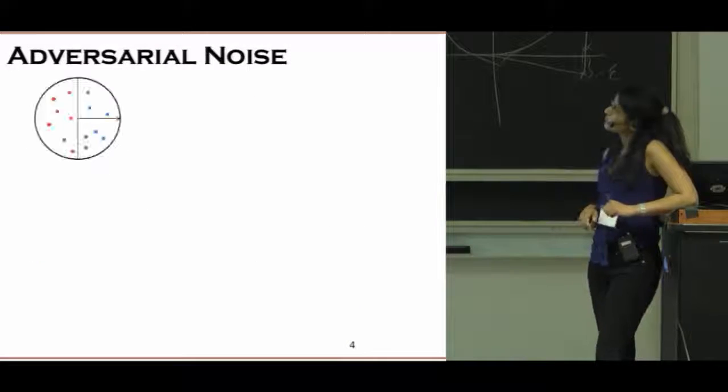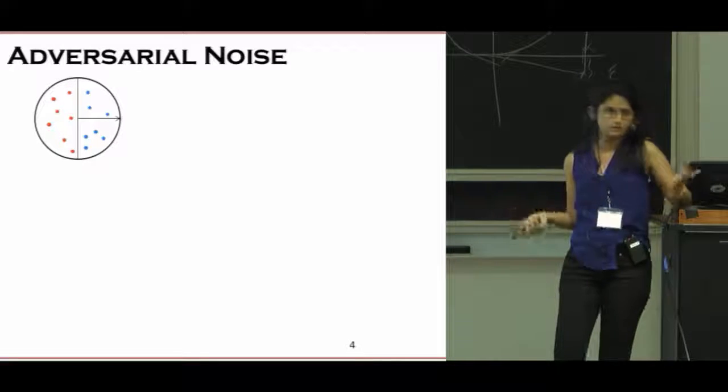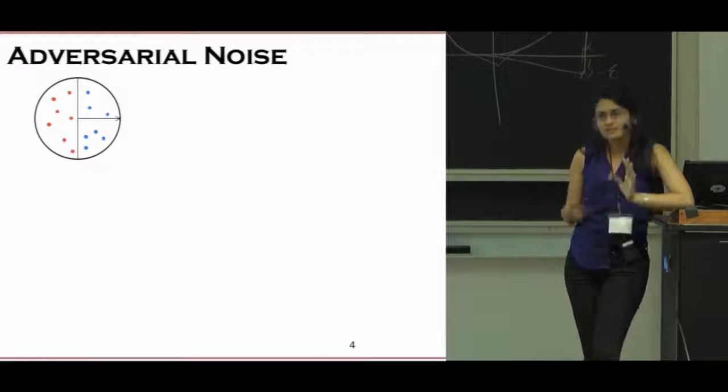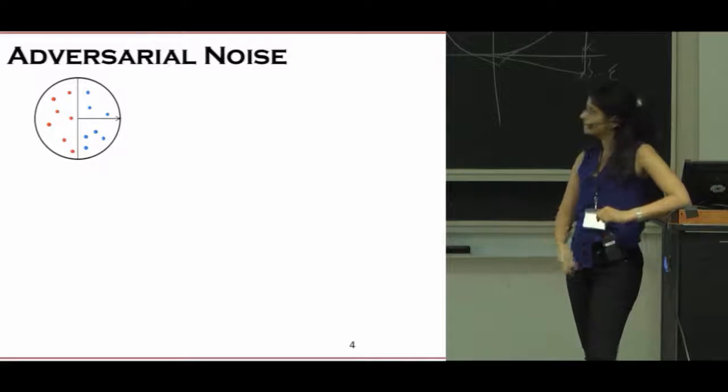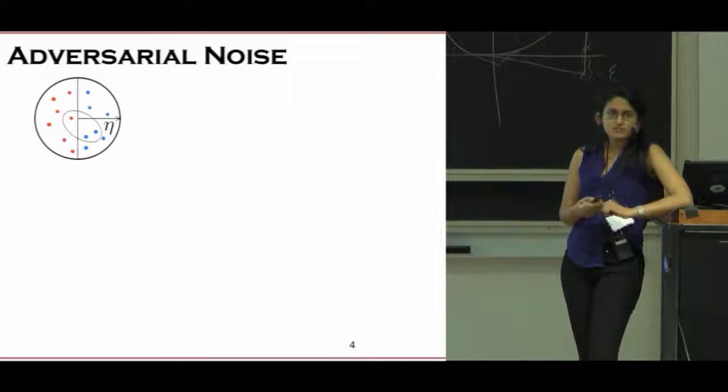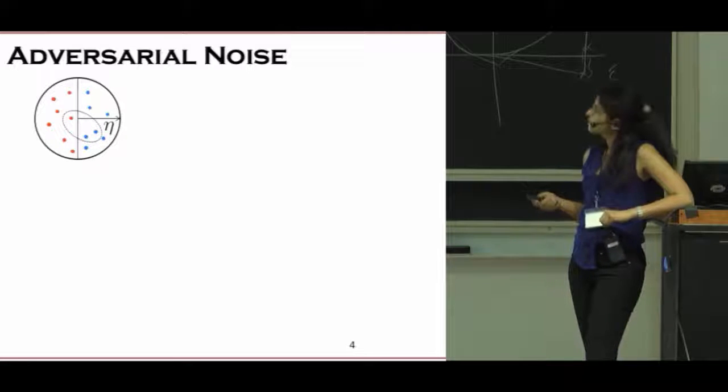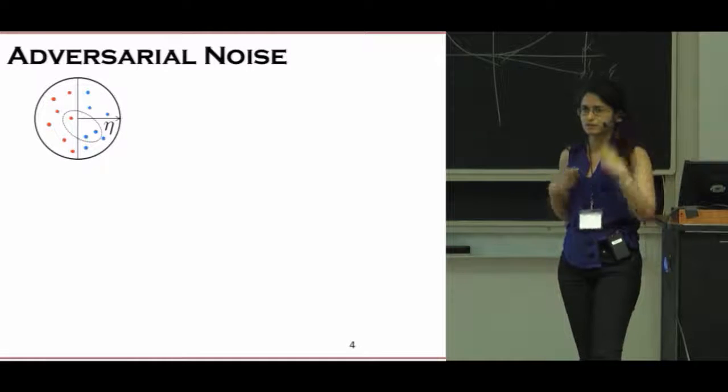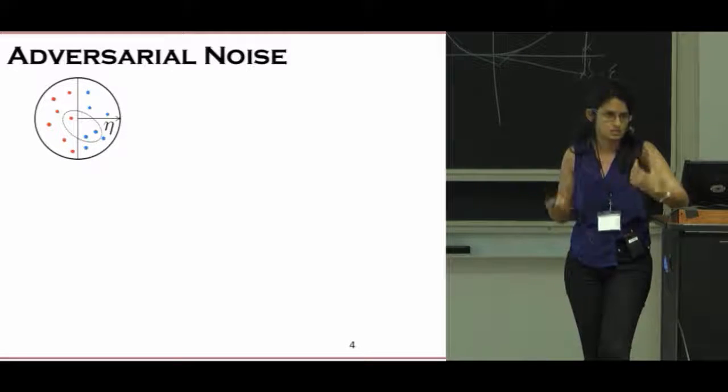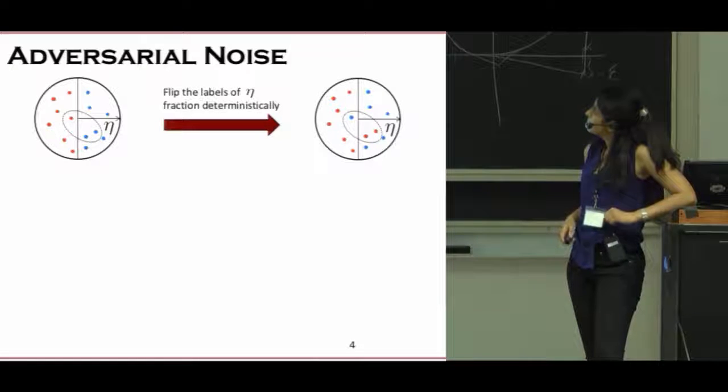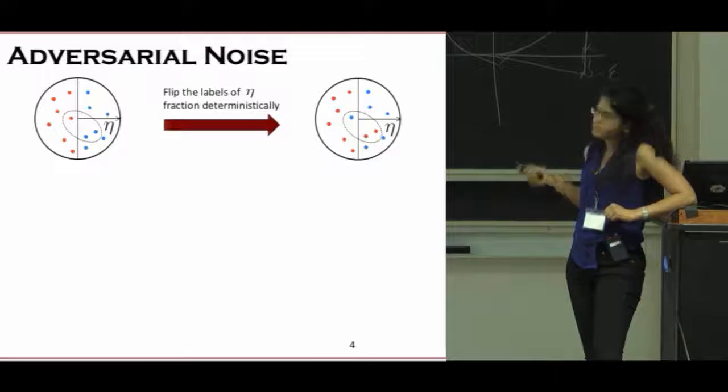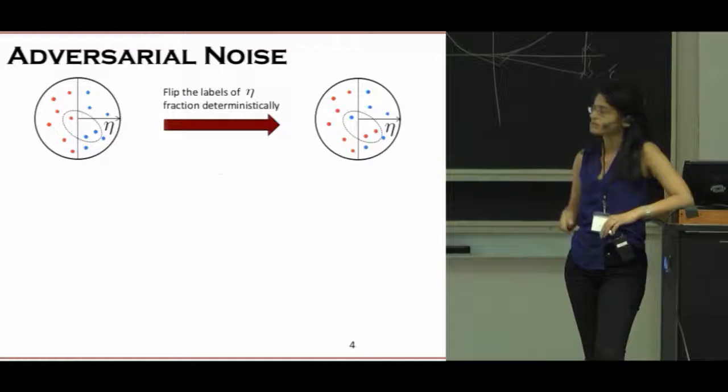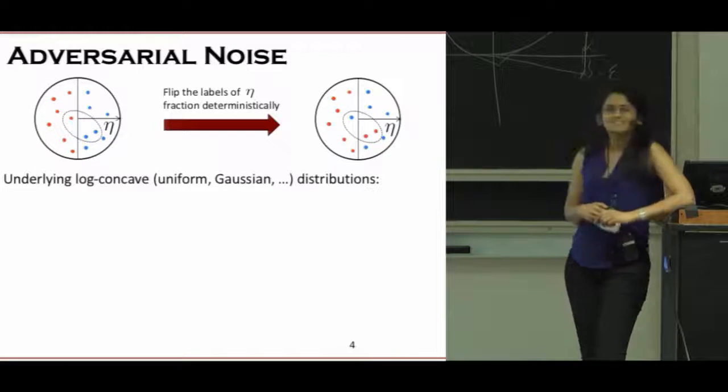Another asymmetric noise model is the adversarial noise model, also called agnostic model, where you can think of it as starting with the realizable case, and then you have an adversary that comes in, and the adversary will flip an eta fraction of the points. So this could be a very deterministic fashion of flipping. It doesn't have to be probabilistic. And what you want to do after this flip is done is find the opt half-space.